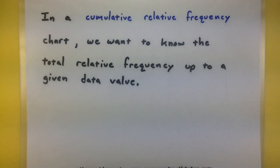In a cumulative relative frequency chart, we're interested in knowing the total relative frequency up to a given data value. This means we'll often need to look at the relative frequency and add up values less than or equal to some given value. It's actually not as hard as it seems, so let's grab some data and see what this looks like.